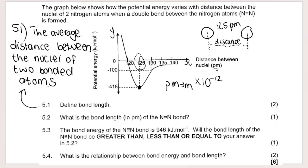The x-axis measures distance between nuclei, and at the point where potential energy is at its lowest, a stable molecule forms — that's when the chemical bond occurs, giving us the bond length of 125 picometers. Just remember: if they ask for it in meters, multiply by 10 to the negative 12. The bond energy for this nitrogen double bond is 418 kilojoules per mole.